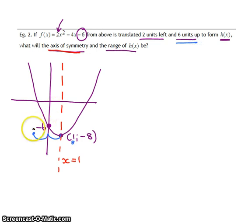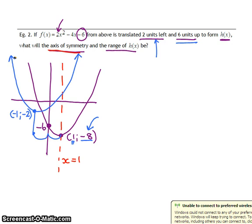And if I translate it 6 units up, it would move up this turning point from negative 8 until a y value of negative 2. So my vertical translation changes my y value of my turning point, and it moved up 6 units to minus 2, and my horizontal translation changes my x value of my turning point to negative 1. There's no change in the shape, so my original shape and my current shape are exactly the same. It was not stretched or reflected.